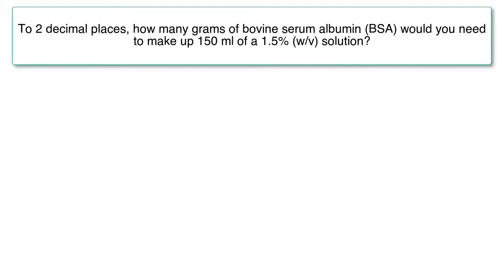Now weight by volume is just a way of expressing a percentage form of the grams per mil. So weight by volume is equivalent to grams per mil expressed as a percentage.